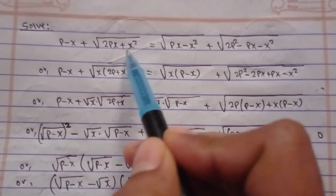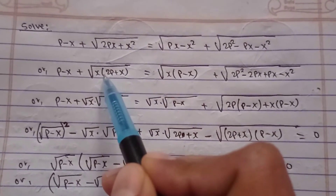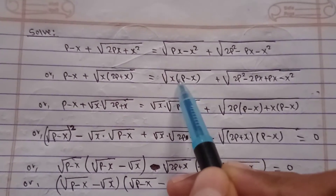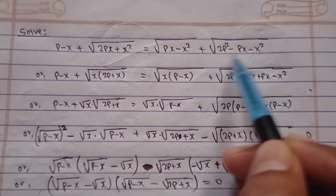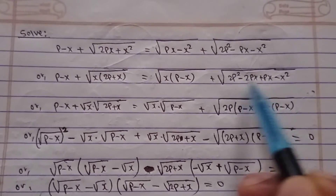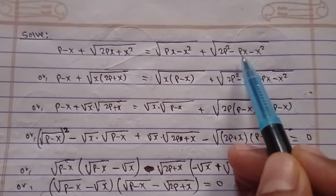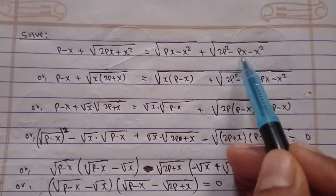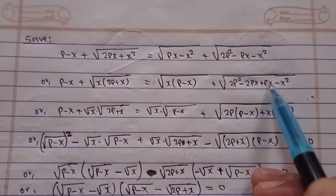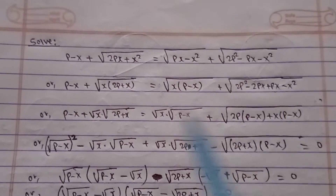From this term we can take X as a common factor, and from this term we also take X as common. In this term we can factorize it by the first-into-last method. So I broke this minus term to get P·X into minus 2P·X plus P·X, so that I could take common from these two terms.